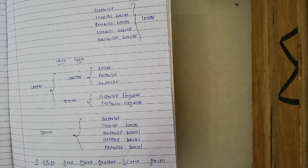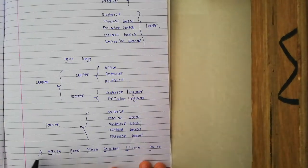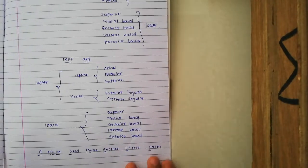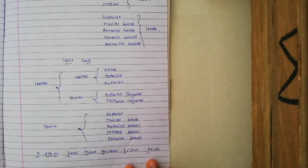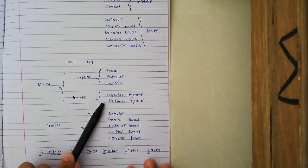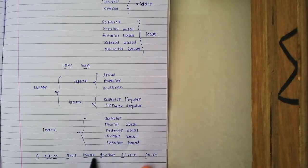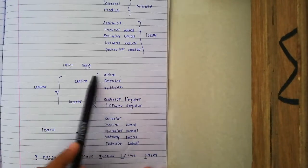I have a mnemonic to remember this: 'A PALM SEED MAKE ANOTHER LITTLE PALM.' This applies to both lungs, but remember that superior lingual and inferior lingual are specific to the left lung. A stands for apical.